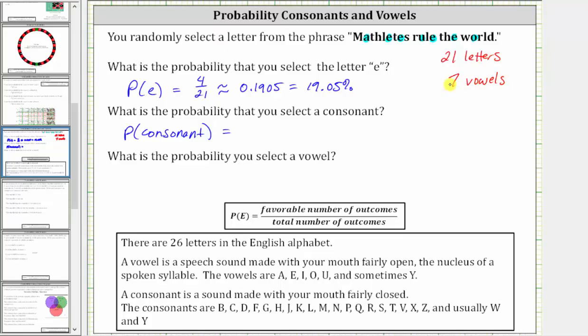Well, if there are 21 letters and seven vowels, 21 minus seven is 14. There must be 14 consonants. Of course, we can count them, which does give us 14 consonants.